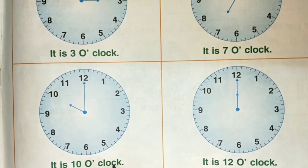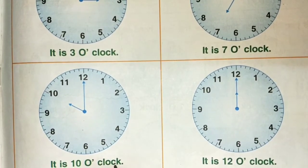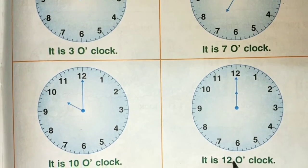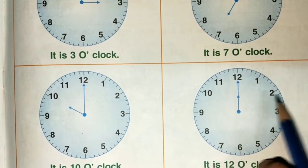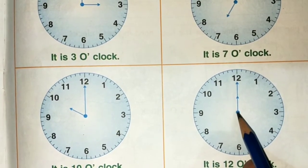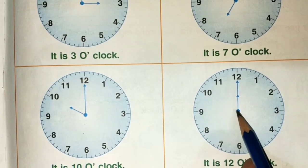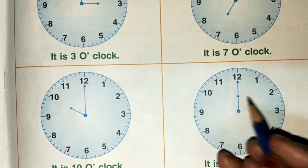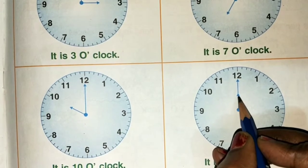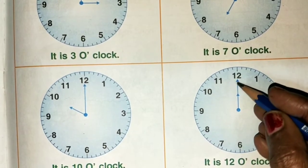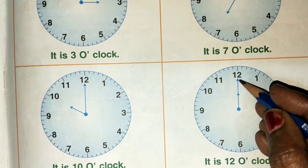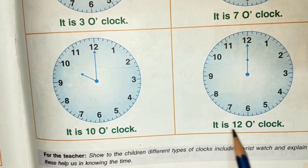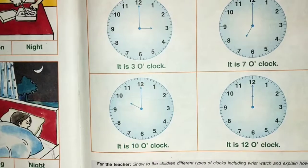Now children, tell me what time is it here? Here both the hour hand and minute hand are at 12. This is the hour hand and this is the minute hand. So it is 12 o'clock now.